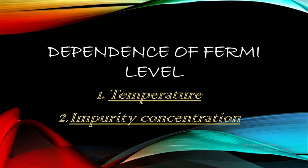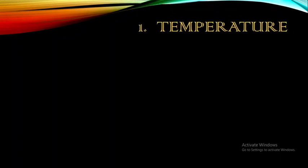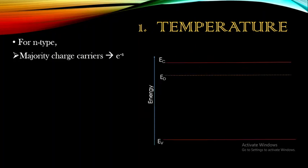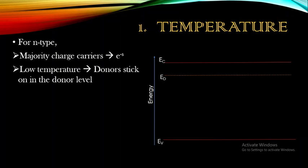Let's start one by one. First we are going to discuss the temperature dependence on Fermi level — that is, what happens at low temperature and as the temperature goes on increasing, how the Fermi level is going to change. For n-type semiconductors, the majority charge carriers are electrons from donors, due to the pentavalent impurities added. The impurity level lies just below the conduction band.